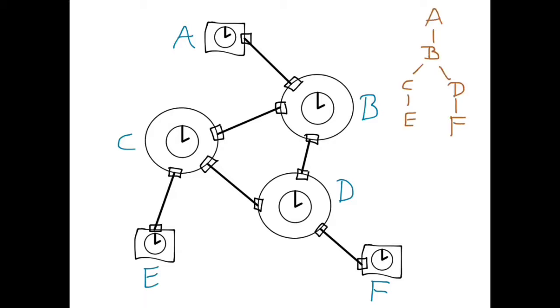In this hierarchy, A will be the master of B. Its port will therefore be in the master state. B, in turn, will be the slave of A and its corresponding port will be in the slave state.